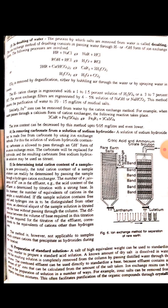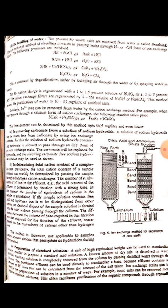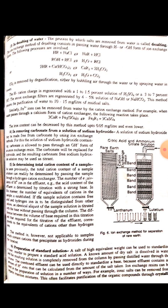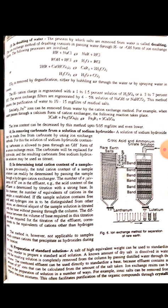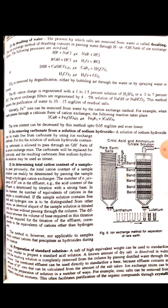Next application is in removing carbonate from a solution of sodium hydroxide. A solution of sodium hydroxide may be made free from carbonate by using ion exchange methods. For this, the solution of sodium hydroxide containing carbonate is allowed to pass through a hydroxyl form of an anion exchange resin. The carbonate gets replaced by hydroxide and the resulting carbonate-free sodium hydroxide solution is used as a titrant.